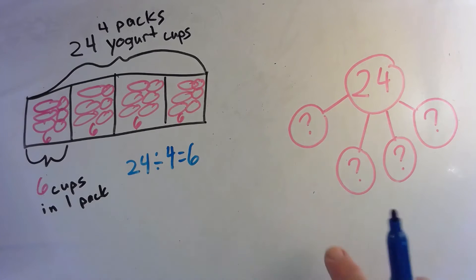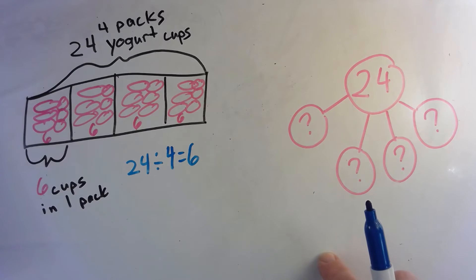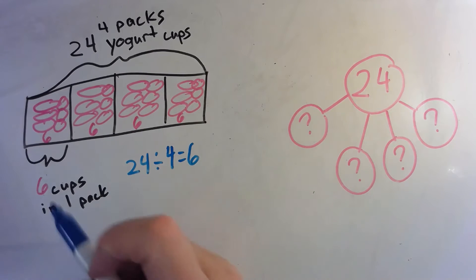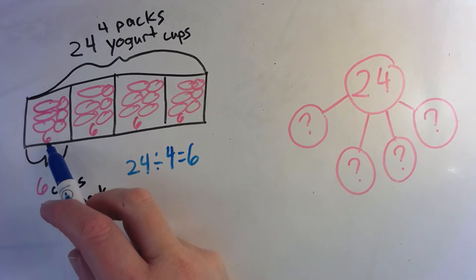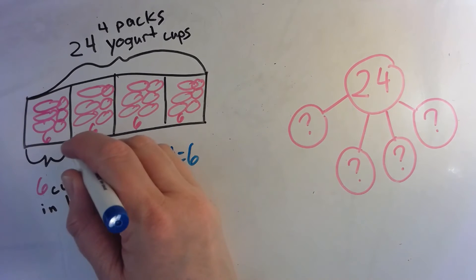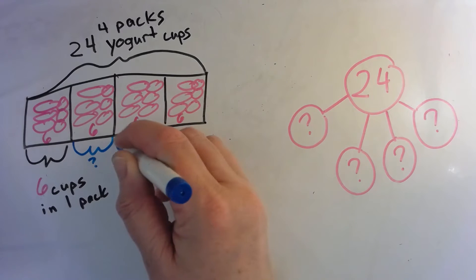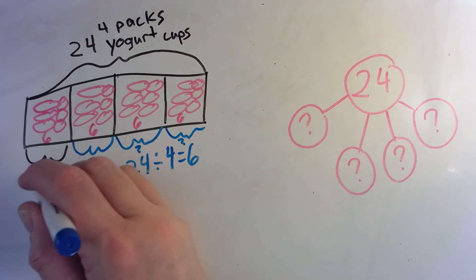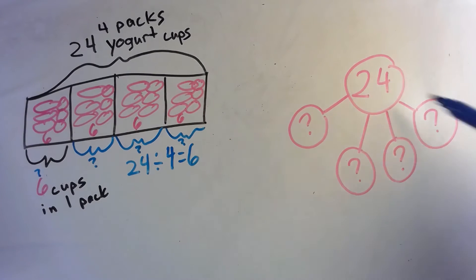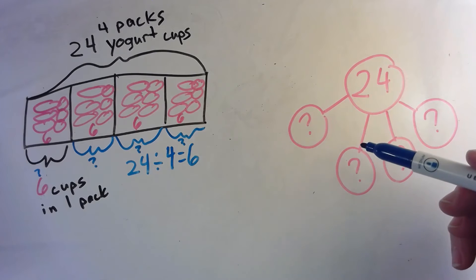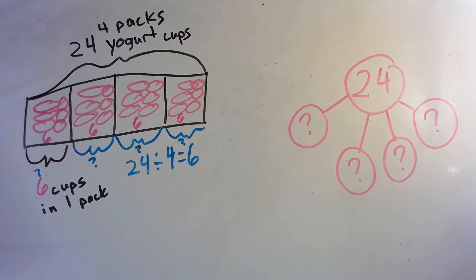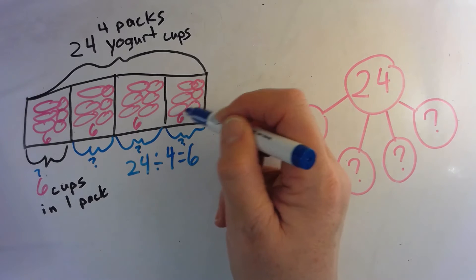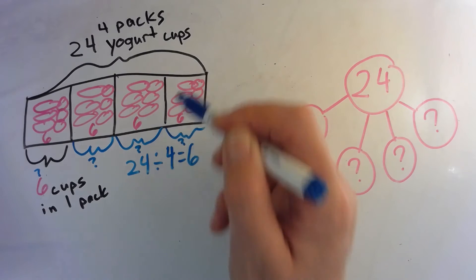Is the unknown in the number bond the same as the unknown in the division problem? We didn't know the six, so each one of these parts could be a question mark. Yes — the unknown represents the size of the group, how much is in each bag.